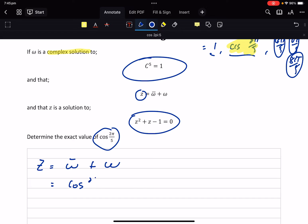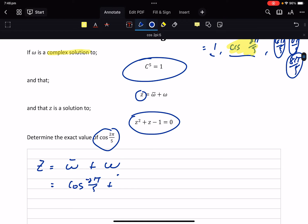cos 2π/5 plus i sine minus 2π/5, and then the normal root will be cos 2π/5 plus i sine 2π/5.